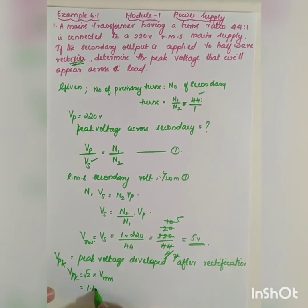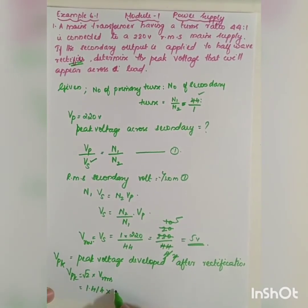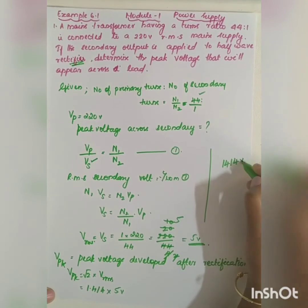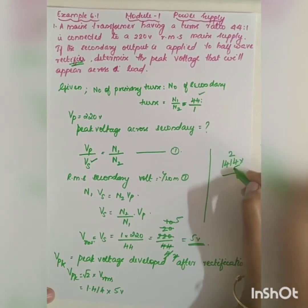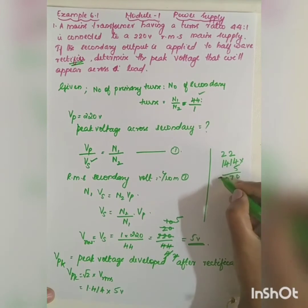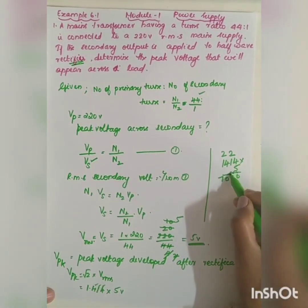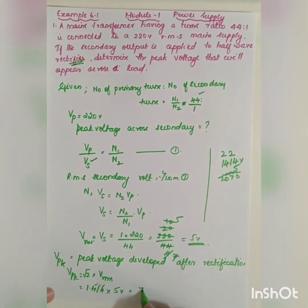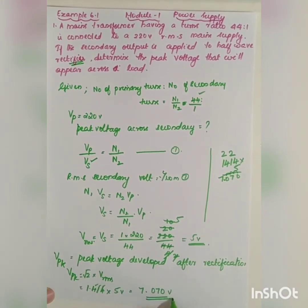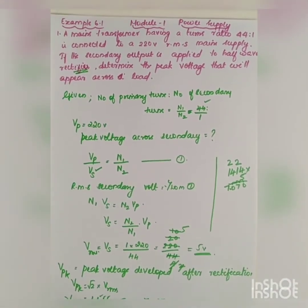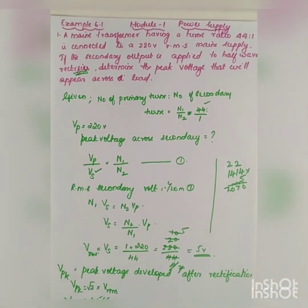So Vpk equals 1.414 multiplied by Vrms, and Vrms equals 5 volt. Calculating 1.414 into 5: 4 fives are 20, and after placing the decimal, shifting 3 digits to the left gives a value of 7.070 volt. So Vpk is equal to 7.07 volt.